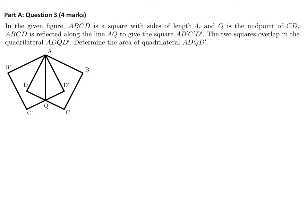In the given figure, ABCD is a square with side lengths of four. And Q is the midpoint of CD. ABCD is reflected along the line AQ to give the square AB prime, C prime, D prime. The two squares overlap in the quadrilateral ADQD prime, determine the area of quadrilateral ADQD prime.